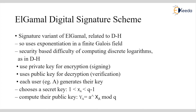The signature variant of ElGamal is related to the Diffie-Hellman scheme. It uses exponentiation in a finite Galois field, which contains finite prime numbers. Security is based on the difficulty of computing discrete logarithms. As in DH, it uses the private key for signing and the public key for verification.